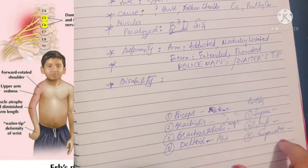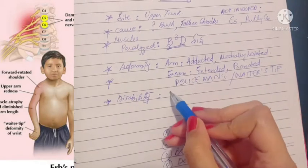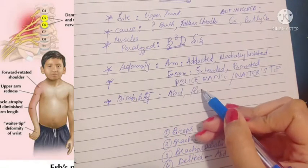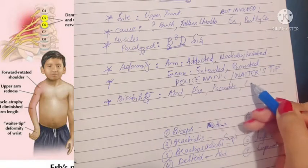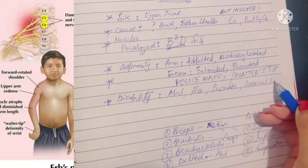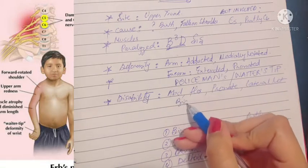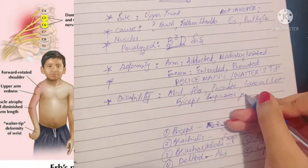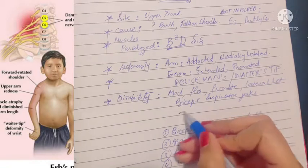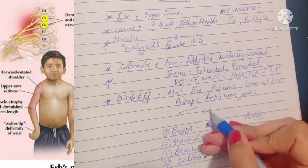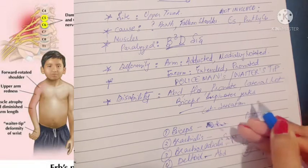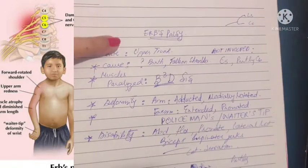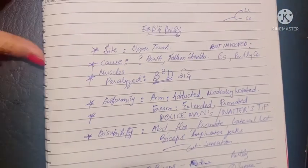What will be the disability? The person won't be able to abduct the arm, flex the forearm, supinate the forearm, or laterally rotate the arm. Biceps and supinator reflexes will be lost, and cutaneous sensation over the deltoid will be lost. This is a brief overview of Erb's palsy, which is very important from an exam point of view.